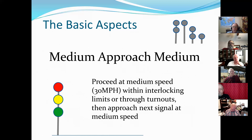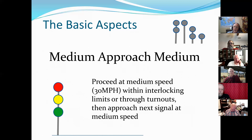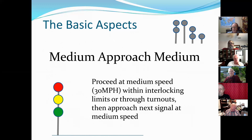Medium approach medium: proceed at medium speed — that's what the green tells you — within the interlocking or through the turnouts, then approach the next signal at medium speed. It sounds like double talk, but what it means is you're getting ready to be diverted at medium speed, and I need you to approach the next signal at medium speed as well. So it's telling you what to do here and what to be prepared for at the next signal. Medium approach medium is a little hard to see off this slide — we'll see it again.